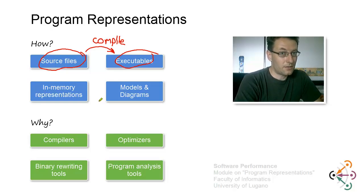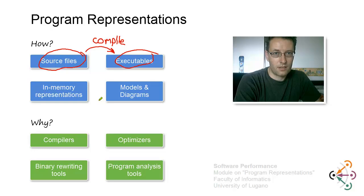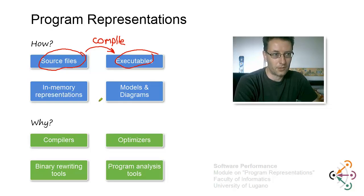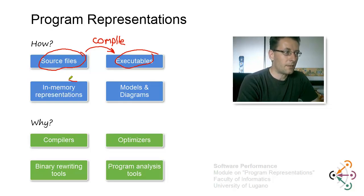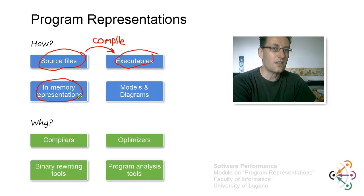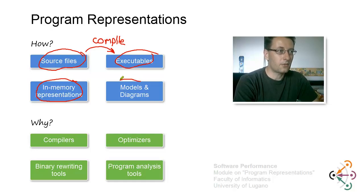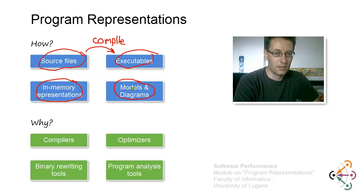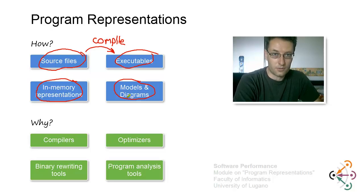But there are other representations of programs, not just those two things you would store in files. You also have in-memory representations that are quite important to understand, particularly if you're interested in building compilers or program analysis tools. Programs are often represented in memory in various forms — as a tree, a list, or a graph. There are also more formal models that model all or a subset of the properties of your programs.